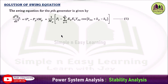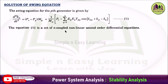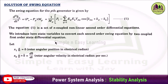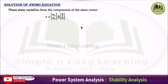The swing equation for the p-th generator is given by d²delta-p/dt² equal to (Ps minus Pp) / Mp, which can be written as 1/Mp times (Ps minus Pp). This equation 5 is a set of n coupled non-linear second-order differential equations. Now the state variables are introduced to convert each second-order swing equation into two coupled first-order state differential equations. The state variables are: x1 equals delta, the rotor angular position in electrical radians, and x2 equals delta-dot, that is d-delta/dt, the rotor angular velocity in electrical radians per second. These state variables form the components of the state vector x equal to [x1, x2] transpose, that is [delta, delta-dot].